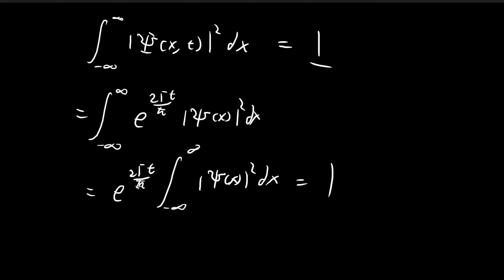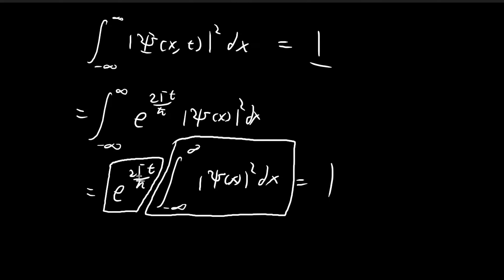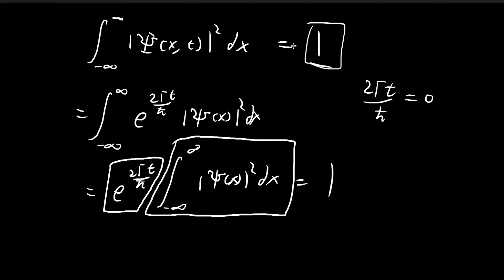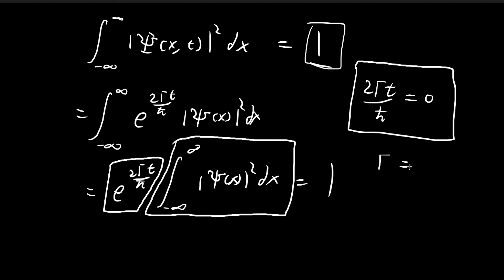We know this entire expression must equal 1. The expression is composed of two components: a time-dependent term and a time-independent term. As time progresses, the time-dependent factor changes, meaning we cannot guarantee the expression always evaluates to 1. The only way out is for 2 gamma t divided by h-bar to equal zero, because then e to the power of zero equals 1, making the expression time-independent and ensuring the integral always evaluates to 1. This condition implies that gamma must equal zero.